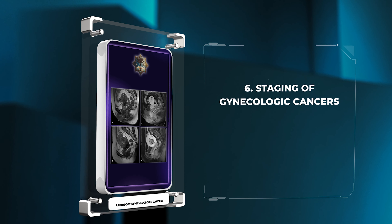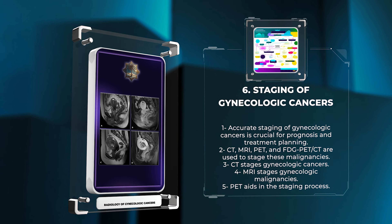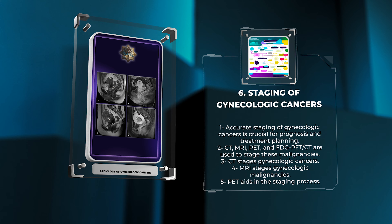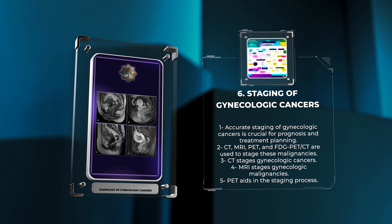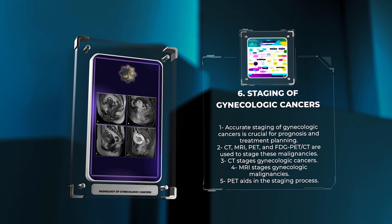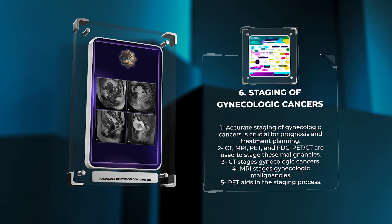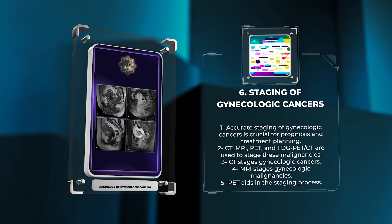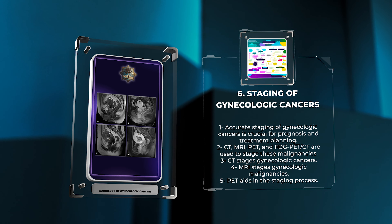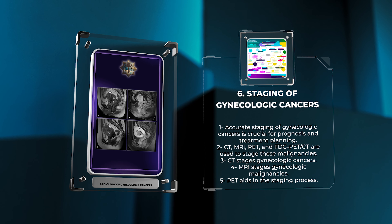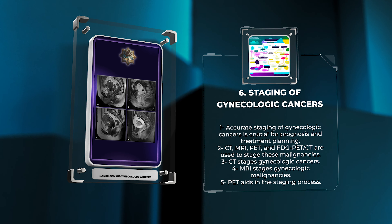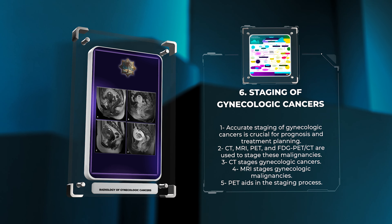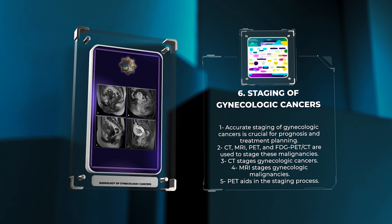Proper staging of gynecologic cancers is crucial for determining prognosis and choosing the most effective treatment strategy. Radiologists employ a combination of imaging techniques, including CT, MRI, PET, and sometimes fluorodeoxyglucose FDG-PET, to accurately stage these malignancies. Each modality, including FDG-PET in specific scenarios, plays an important role in the staging process.